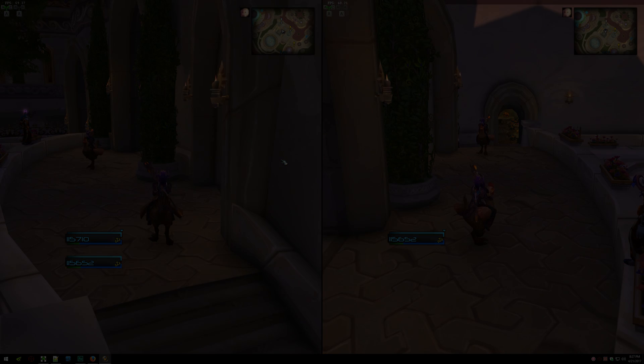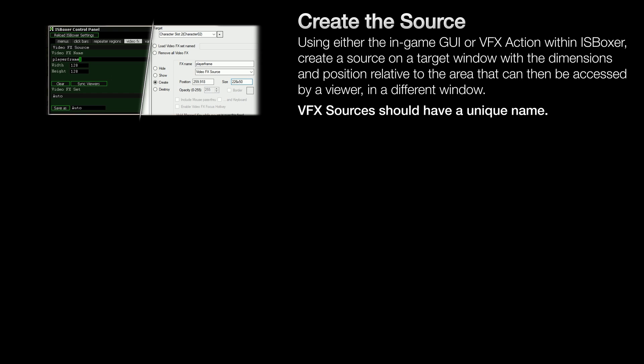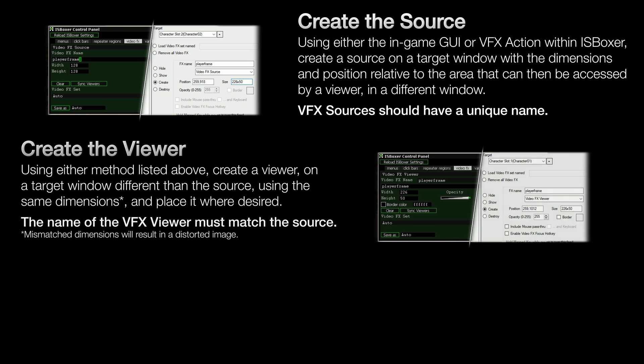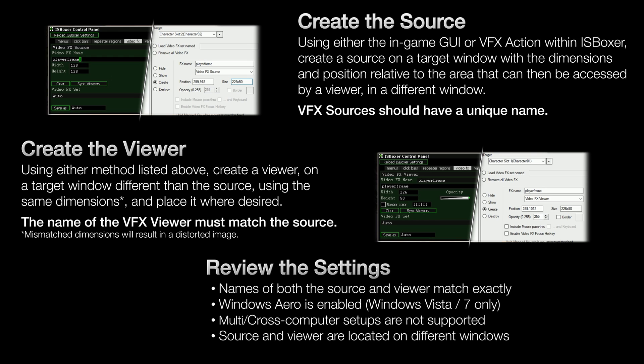That's it for video effects basics. To recap: you first need a source on a window over the part of the UI that you want to look at while on another character. Then you need a viewer in one or more of your other character's windows to view that source. Finally, the names of both the source and the viewer need to be the same so that they can connect. Assuming all the criteria listed at the beginning of this video is also met, that's all that's required in order to get started.